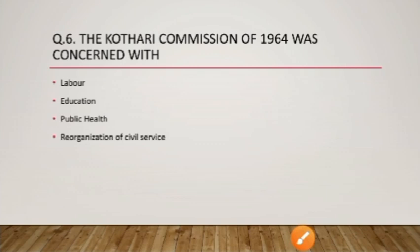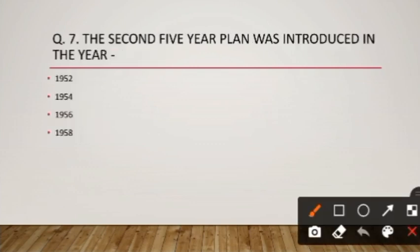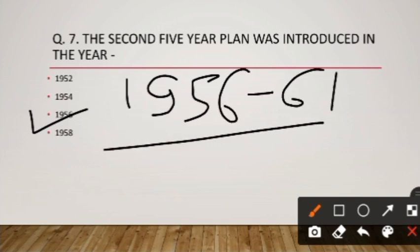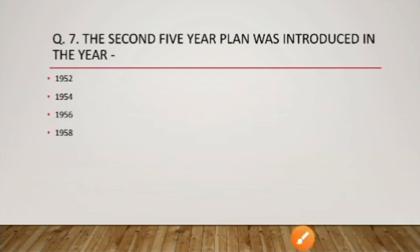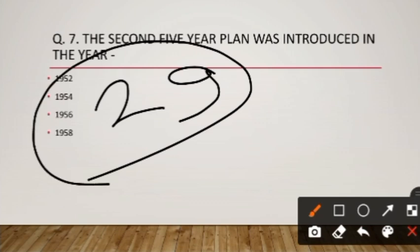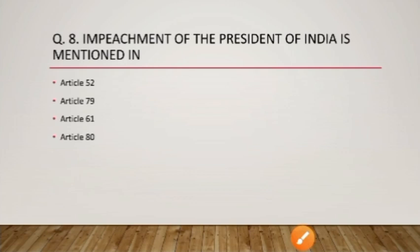Question number seven: the Second Five Year Plan was introduced in which year? Doosri Panchvarshiya Yojana 1956 mein layi gayi thi and it lasted until 1961. It is based on the PC Mahalanobis model — Prashant Chandra Mahalanobis. National Statistics Day is celebrated on 29th June. The Second Five Year Plan's focus was mainly on industry.